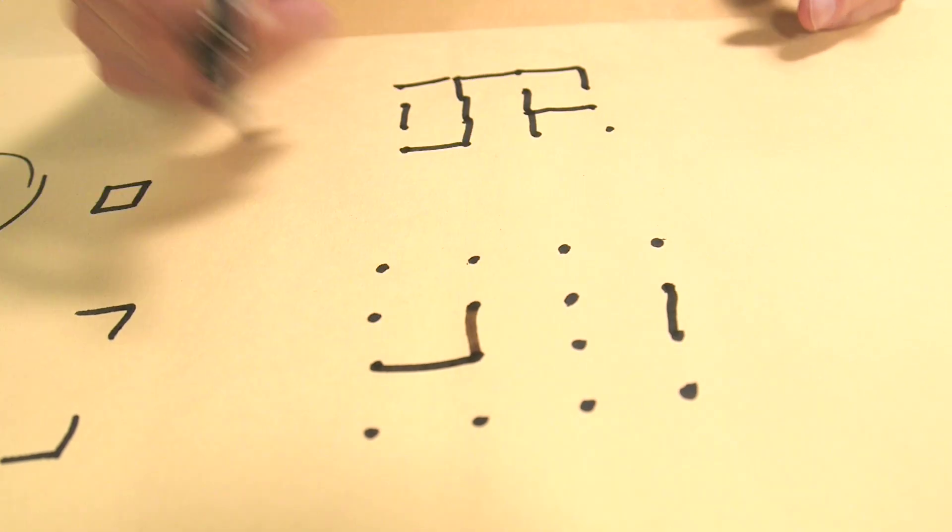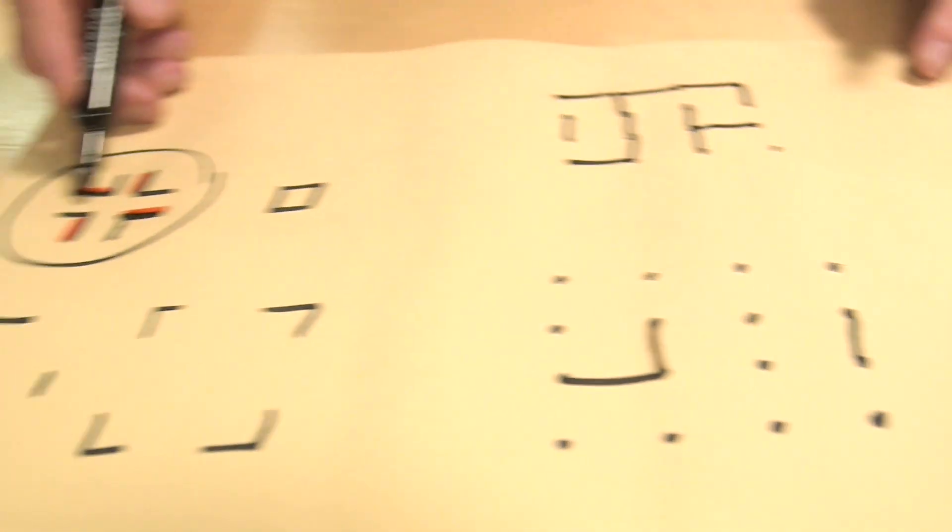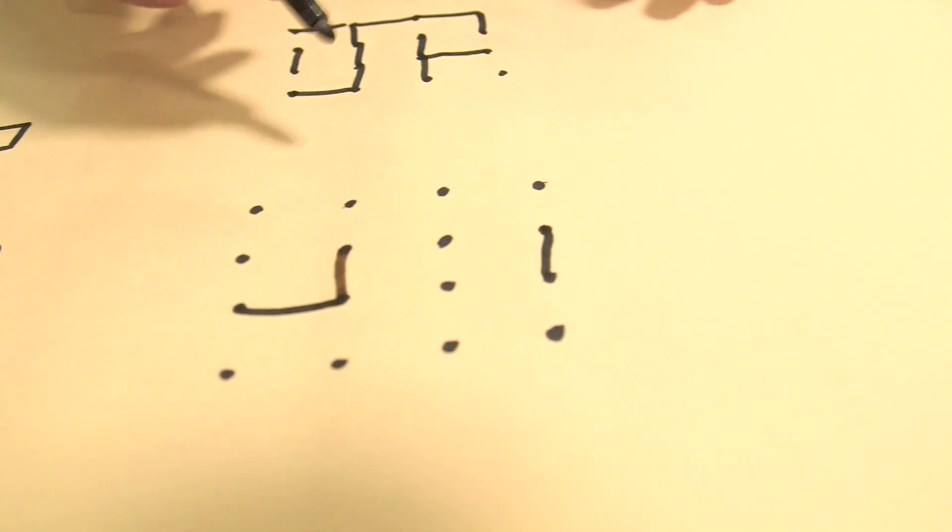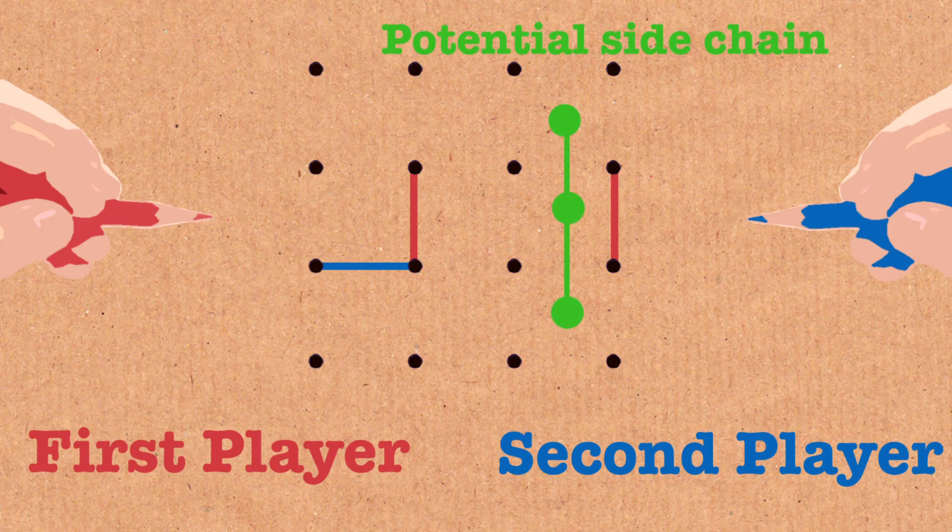He goes over here maybe he's threatening another one. No I play another spoke. I play one of the swastika spokes. I play it perpendicular to his last move usually, adjacent to it if I can like this. And now I can't make any side chains over here.